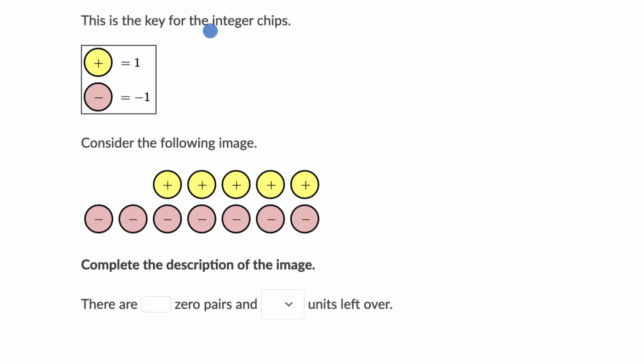We're told this is the key for the integer chips. So this yellow circle with a plus is equal to one. This pinkish circle, peach circle with a minus, that is equal to negative one.